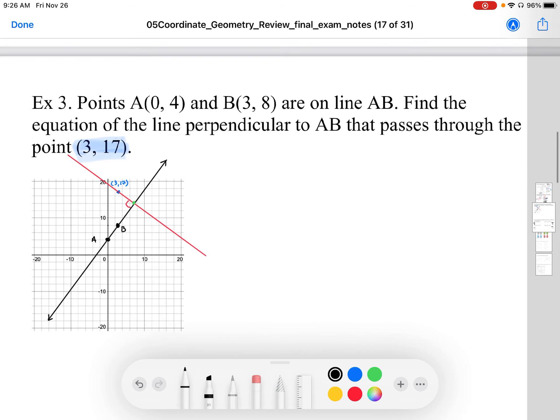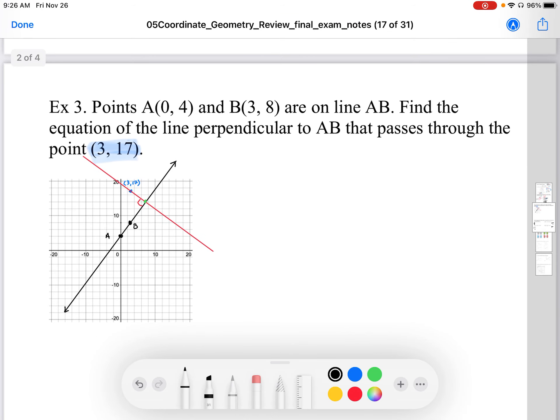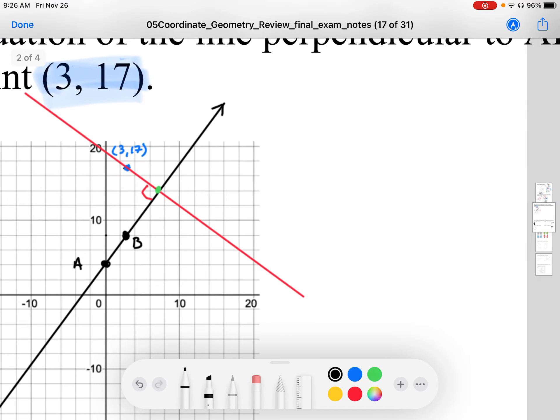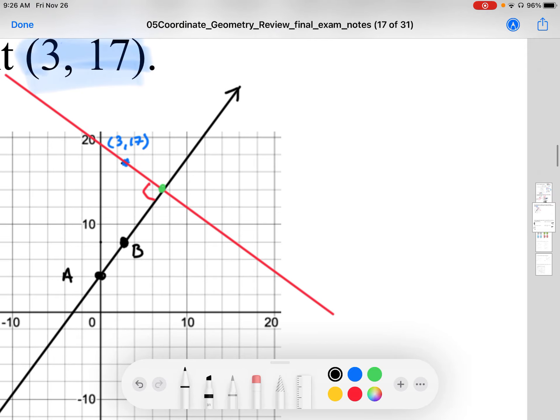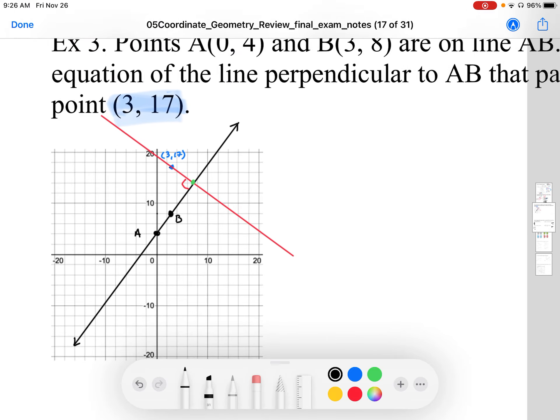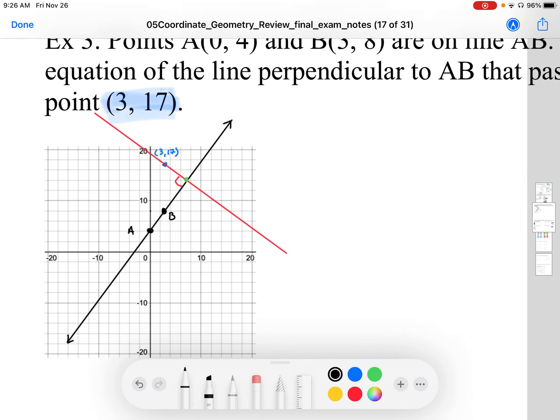We want to find the equation of the line perpendicular to AB that passes through the point (3, 17). So (3, 17) is about here, and we want the equation of that red line. There are a couple things here that we need to figure out.